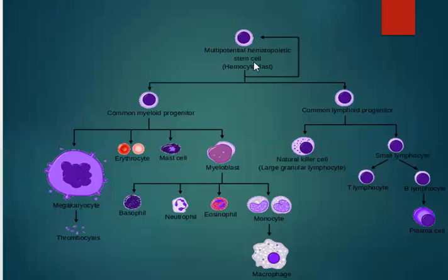We start here with a multipotential hematopoietic stem cell, or hemocytoblast, which gives rise to basically two sections: the lymphoid and myeloid progenitors — a common lymphoid progenitor and a common myeloid progenitor. Let's look at the myeloid section first.